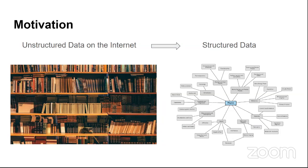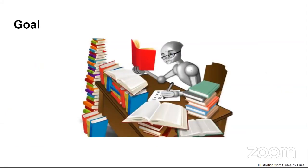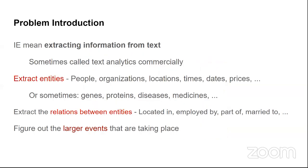Unstructured data on the internet can be collected and formed into a proper structure, from which you can predict many things. The goal of relationship extraction is simple: you have unstructured text or documents, and you want to make sense of it. Relationship extraction is actually a sub-problem of information extraction in NLP — commercially called text analytics.